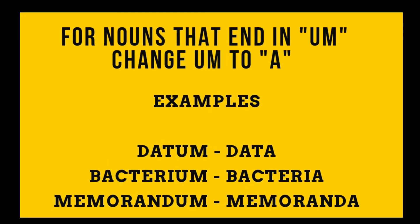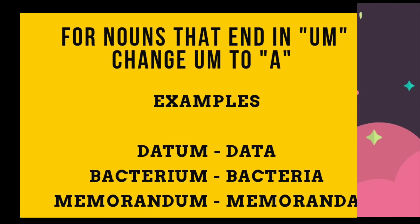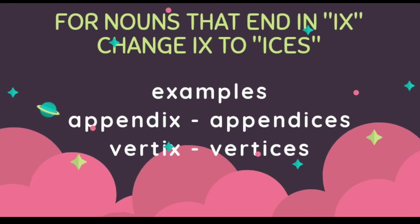For nouns that end in UM, we change UM to A. For example, datum — D-A-T-U-M — becomes data. For nouns that end in IX, we change IX to ICES. For example, appendix becomes appendices, vertex becomes vertices.